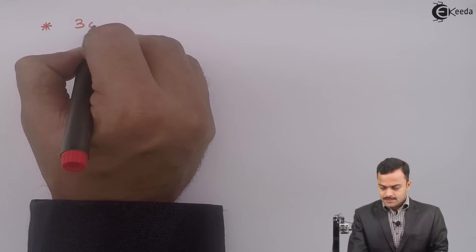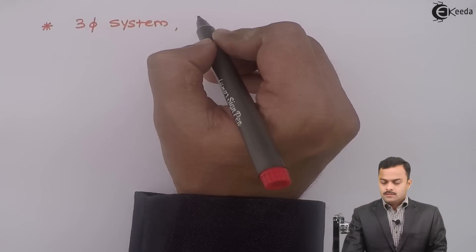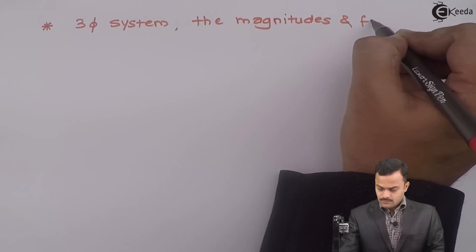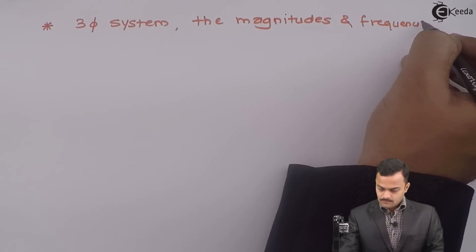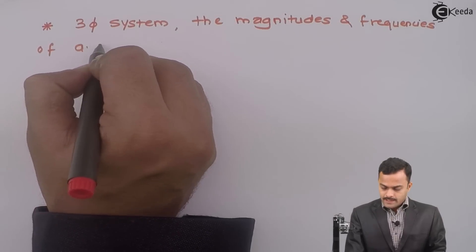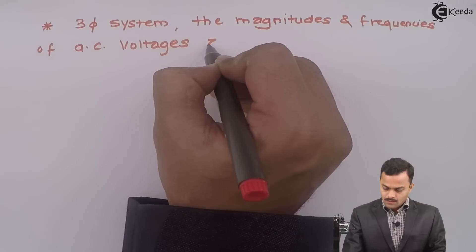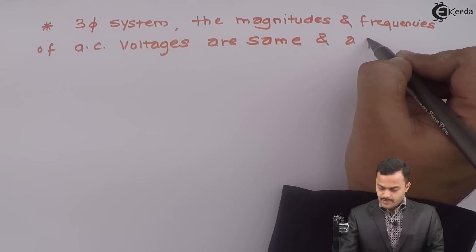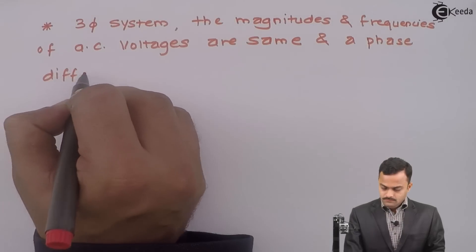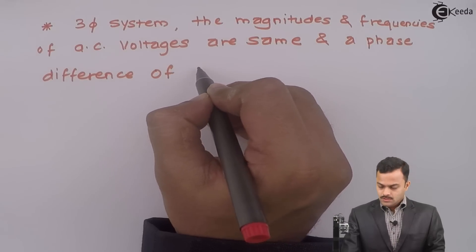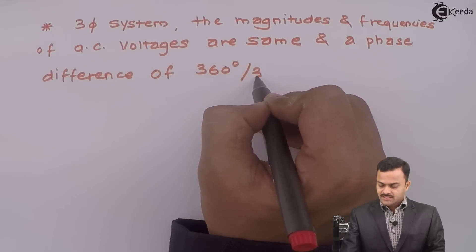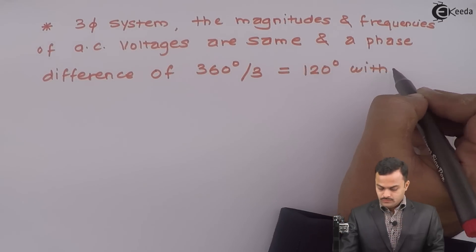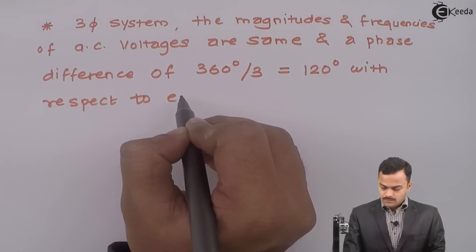So, let's narrate this. Three phase system, the magnitudes and frequencies of AC voltages are same and a phase difference of 360 degree divided by 3 which is nothing but 120 degree with respect to each other.